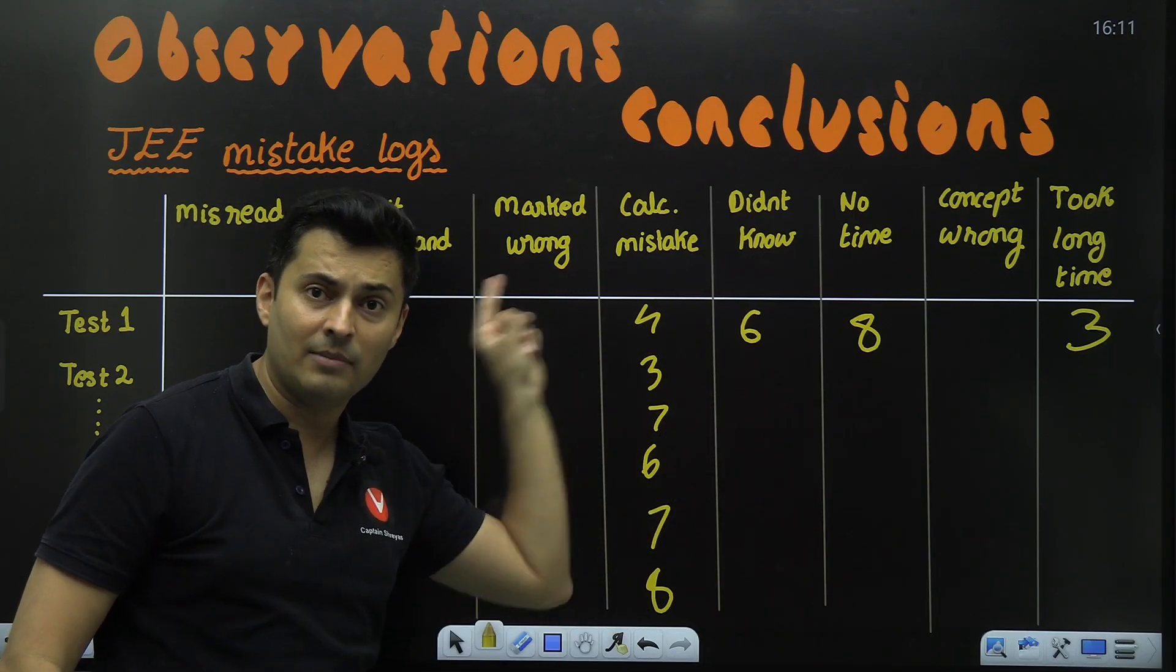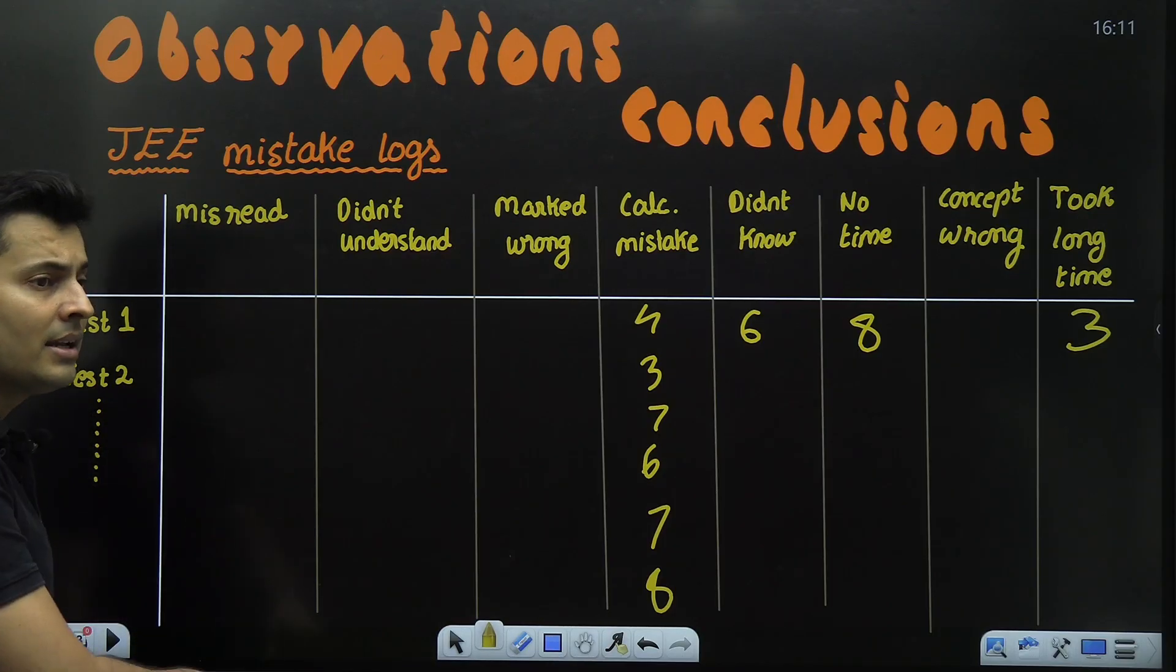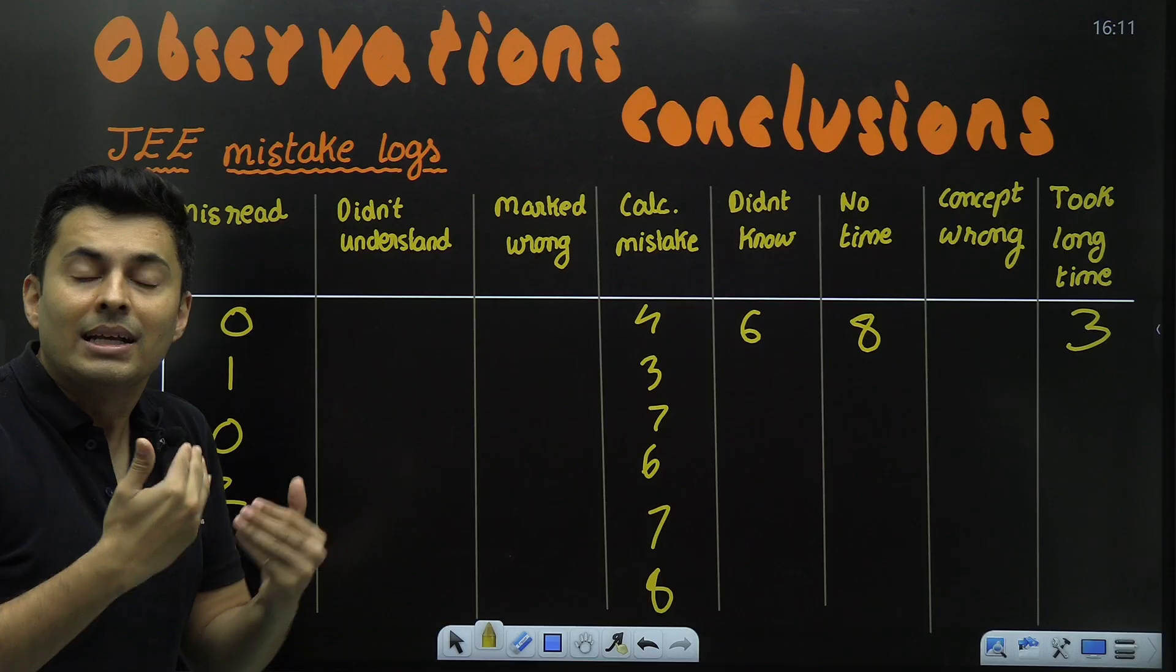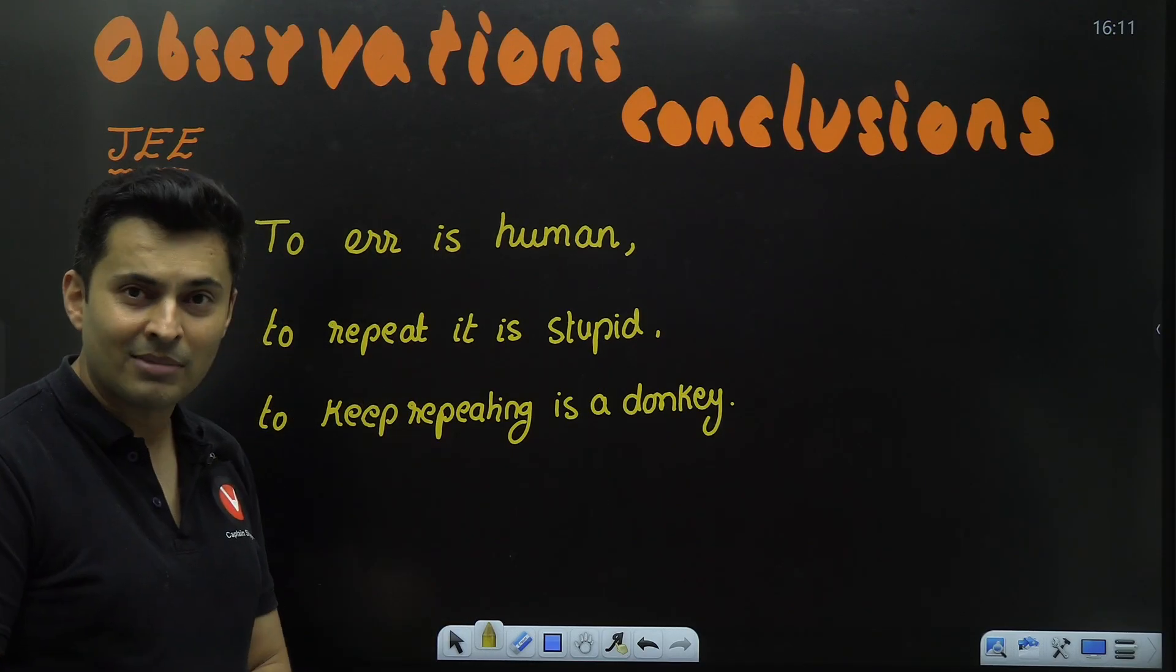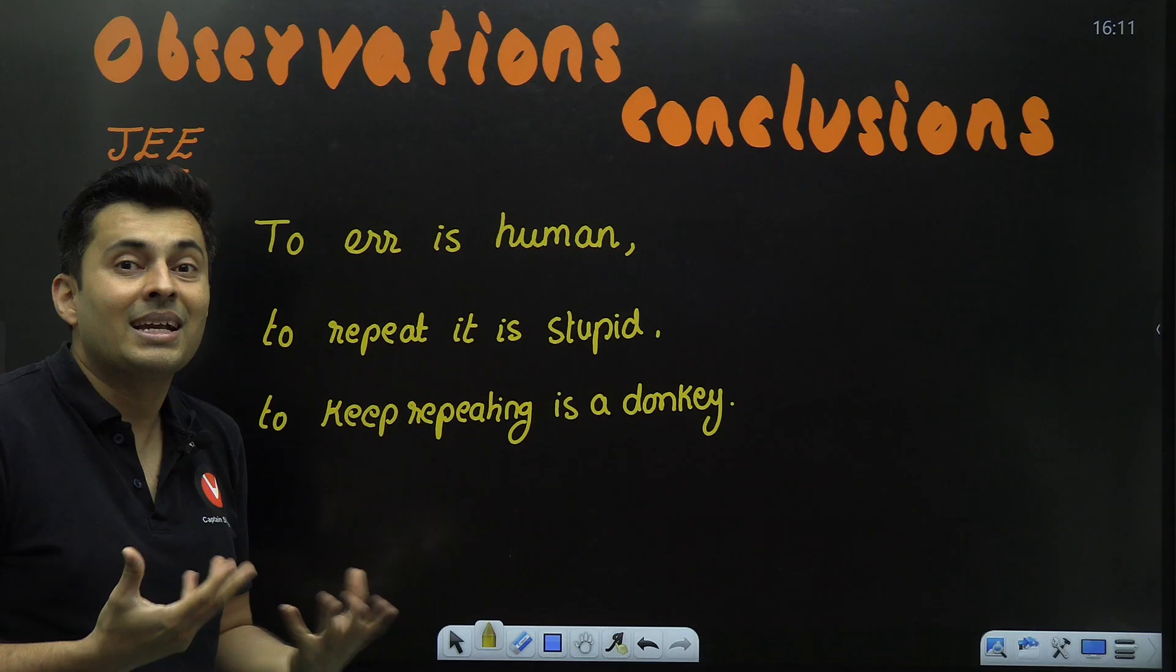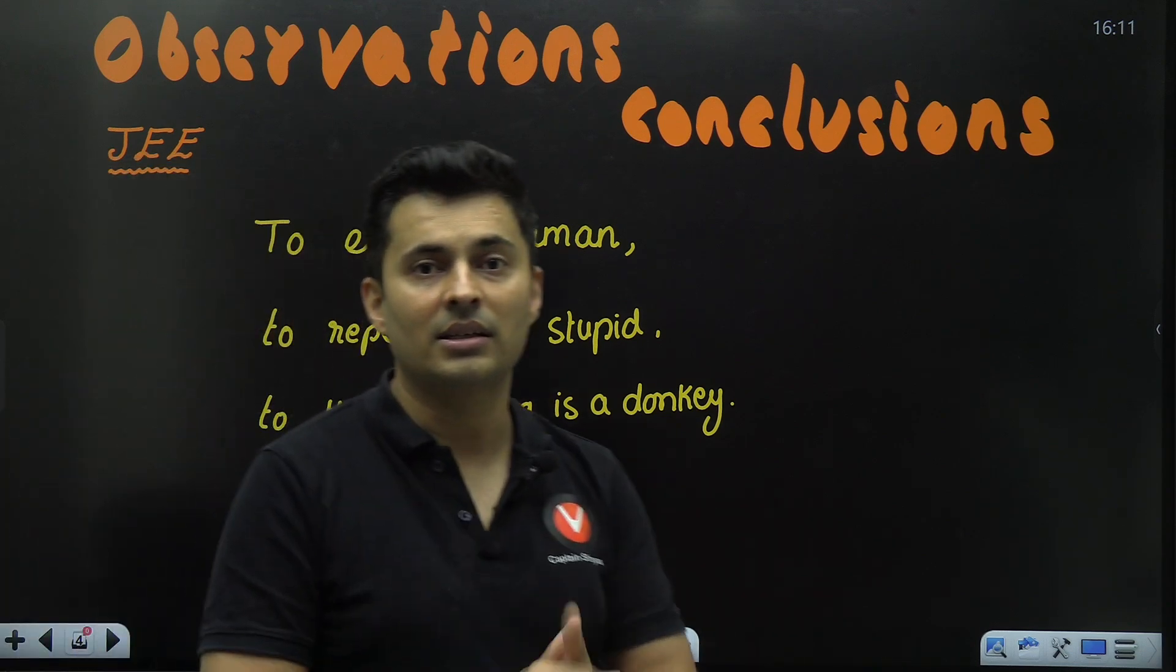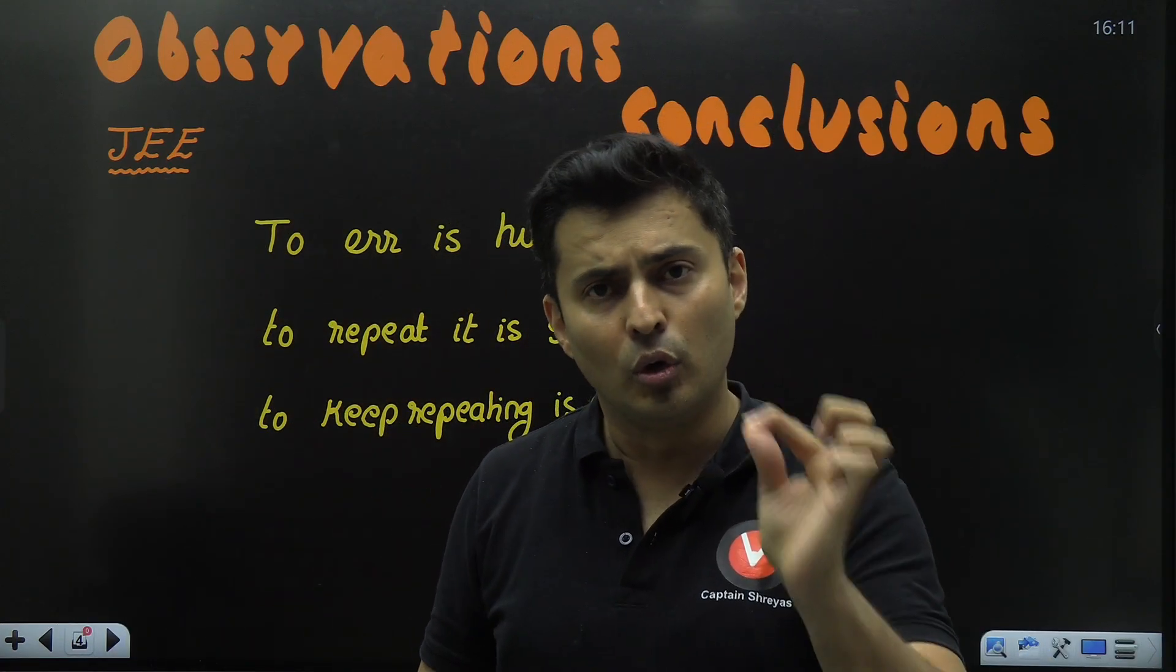A lot of things can happen looking at the table. Don't just fill up the table—analyze why that three number has come. Can I make it two? Can I make it one? This kind of analysis is needed. Remember, to err is human—every human will make a mistake. You might even repeat that, but if you are repeating again and again, that is being a donkey. Who said this? Prabhakar sir said.